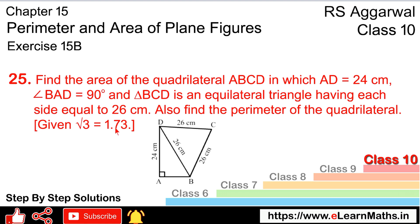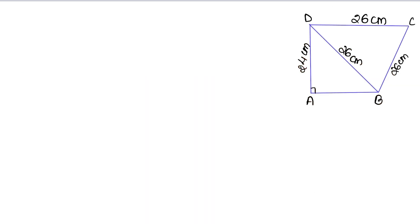How do we find the area? If we find the area of the equilateral triangle and the right triangle separately, we can add them together to get the area of the quadrilateral.